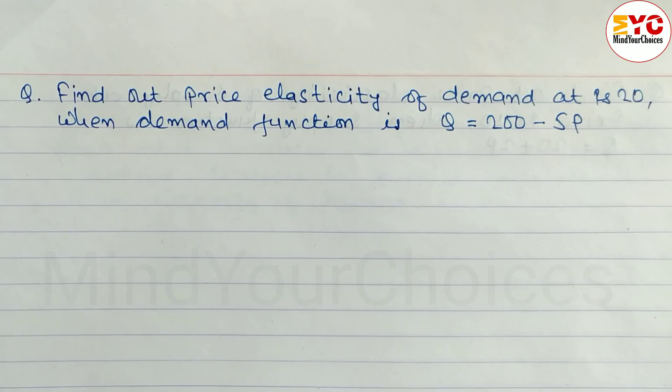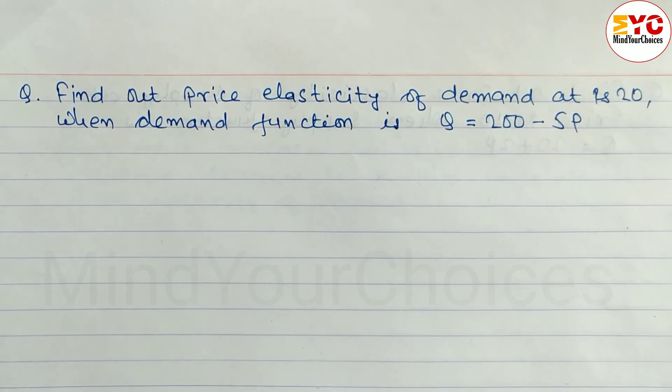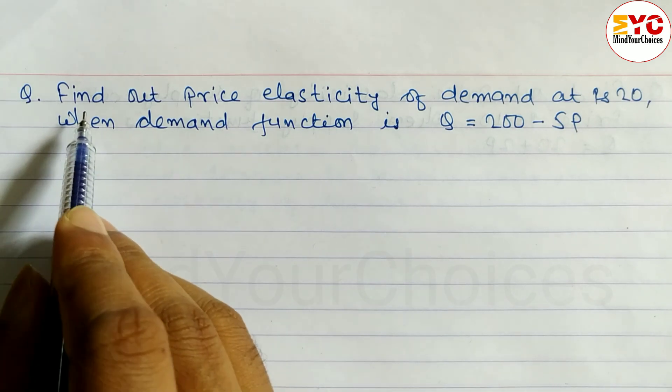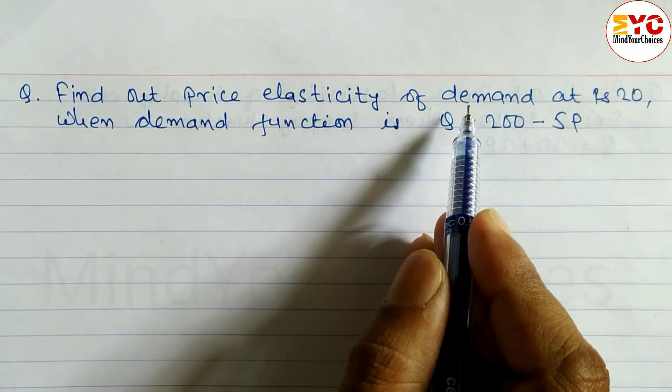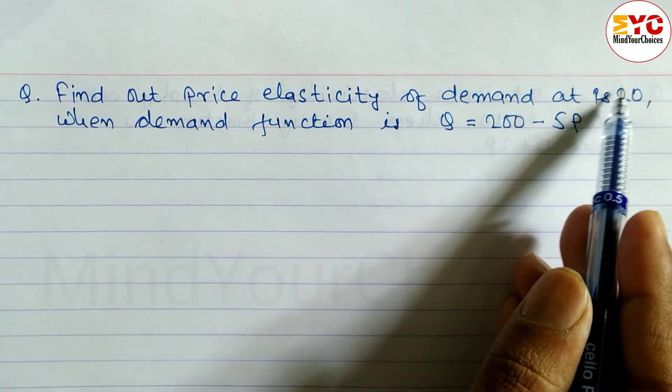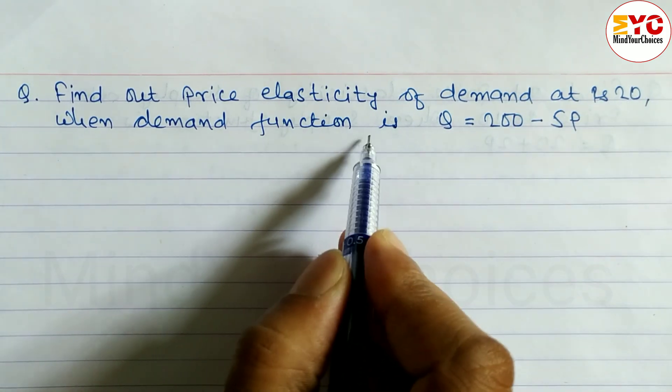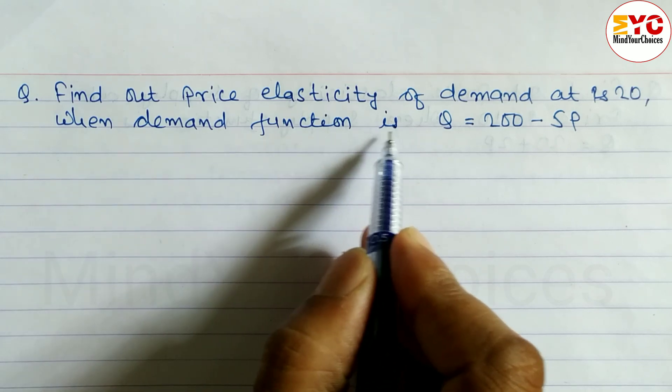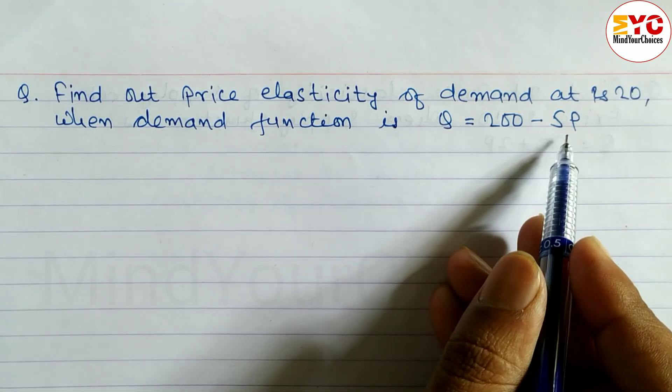Your question from class 11 economics, elasticity of demand and supply. The question is: find out the price elasticity of demand at rupees 20 when the demand function is Q equals 100 minus 5P.